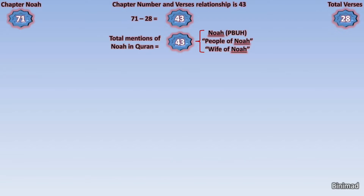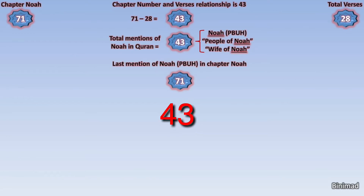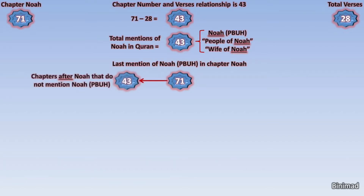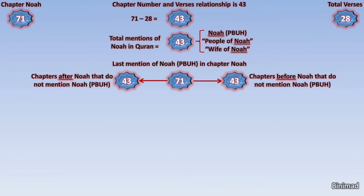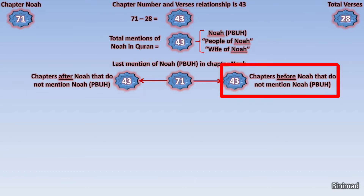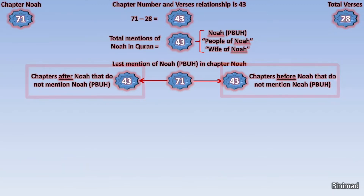These mentions include references to himself or phrases such as 'the people of Nuh' or 'the wife of Nuh.' Regardless, Noah's name was mentioned exactly 43 times — exactly the difference between the chapter number and the verses of Chapter Nuh. Then we are shocked to find that the last mention of Nuh in the entire Quran was in Chapter Nuh. After Chapter Nuh, there are exactly 43 chapters that do not contain any mention of Nuh. Even more shocking: before Chapter Nuh, there are again exactly 43 chapters that do not mention Nuh.